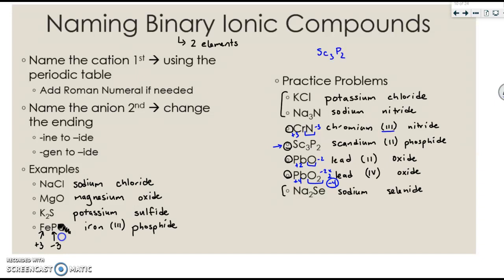We have to do something very similar with Sc3P2. Phosphorus is negative 3 times 2, so it's negative 6. Overall, these three Sc's have to be positive 6. But when we write the roman numeral, we only want the roman numeral for 1 Sc. So I take that overall positive charge, divide by 3 because of the 3 here, to get positive 2. That's why the roman numeral provided is a 2.